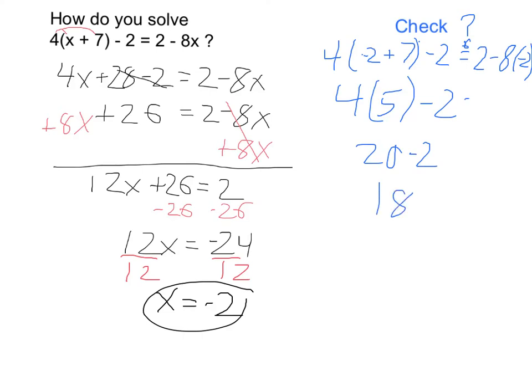On the other side of the equation, I have 2 minus 8 times negative 2. So 8 times negative 2 is negative 16, and if I subtract negative 16, that's the same as adding 18. So this is, I'm sorry, 2 plus 16, which is 18. Minus negative 16 is equal to plus 16. 2 plus 16 is equal to 18, so the whole thing does check out.